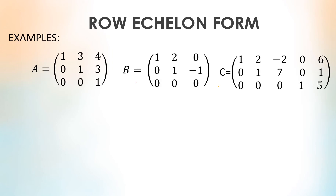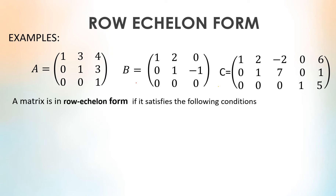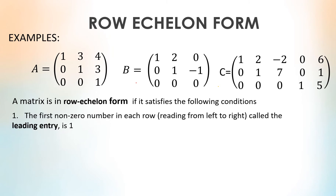What is an echelon matrix? Here we have three examples of matrices in row echelon form. To identify a matrix which is in echelon form, it must satisfy the following conditions. The first non-zero number in each row, called the leading entry, is 1.